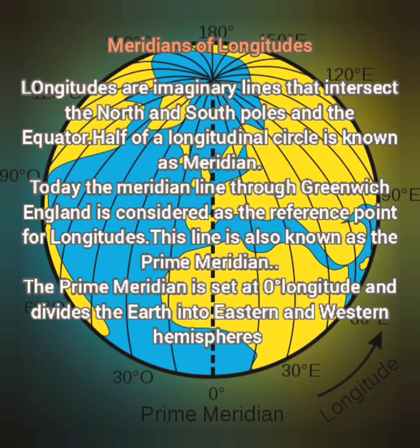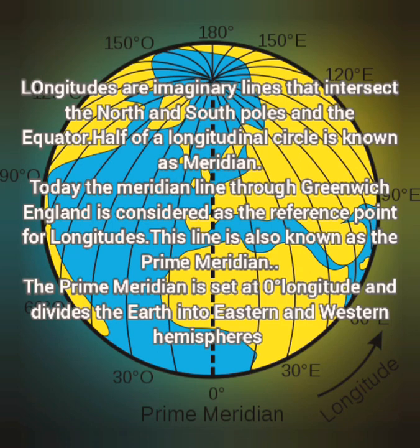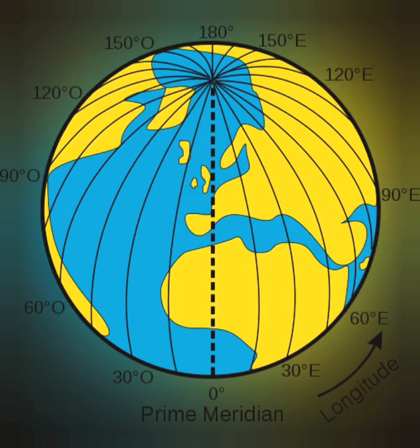Longitudes are imaginary lines that run from north to south — they lie vertically and intersect the north and south poles with the equator. The meridian that passes through Greenwich, England, is considered the reference point for calculating time, known as Greenwich Mean Time, east or west of the prime meridian. The prime meridian is at zero degrees longitude and divides the earth into the eastern hemisphere and the western hemisphere.